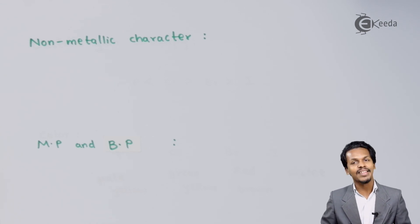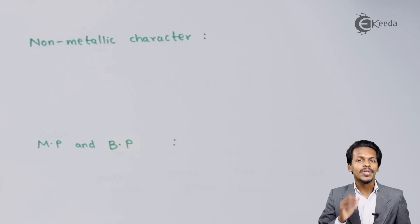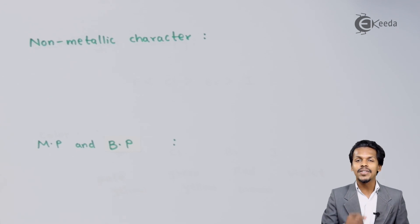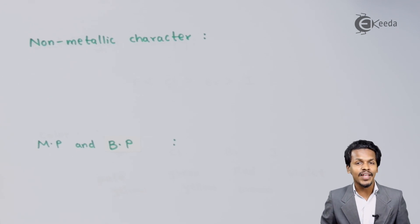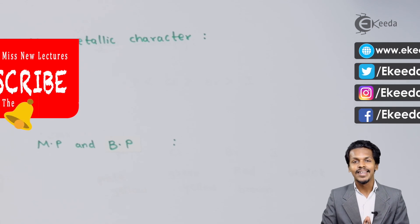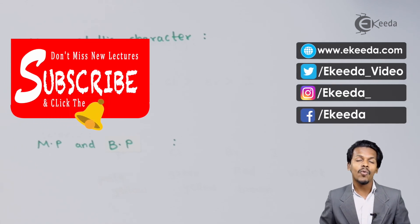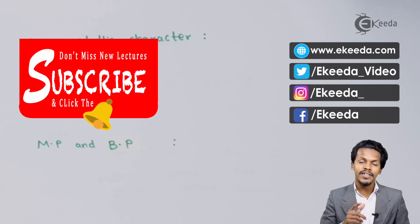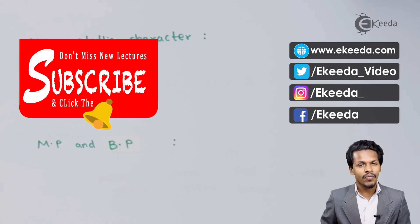So these are the physical trends observable in group 17 elements. Thank you for watching this video. I hope you have understood the trends in group 17 elements. Don't forget to subscribe to the e-kita channel. Thank you so much.